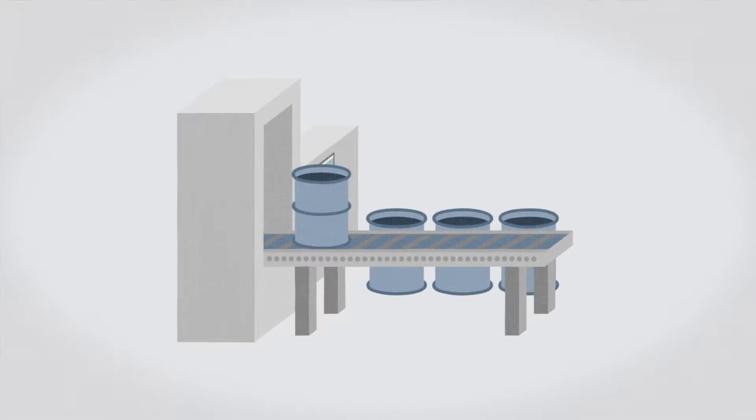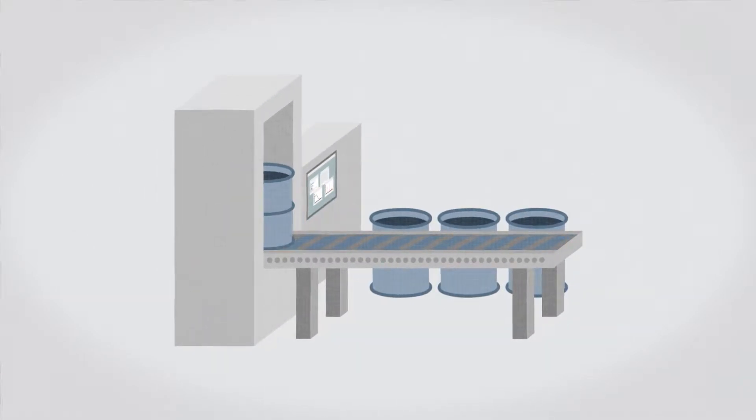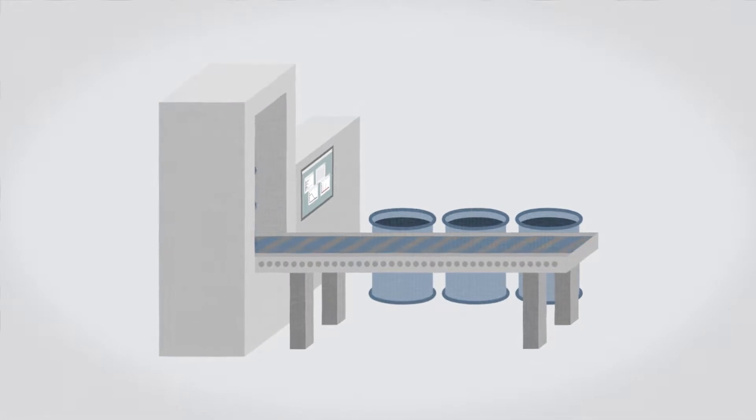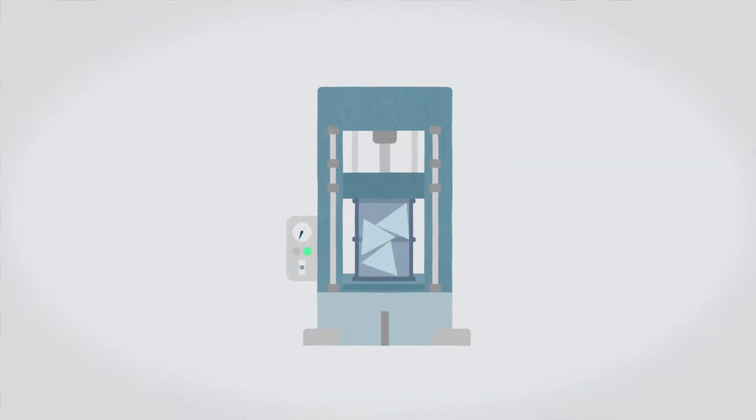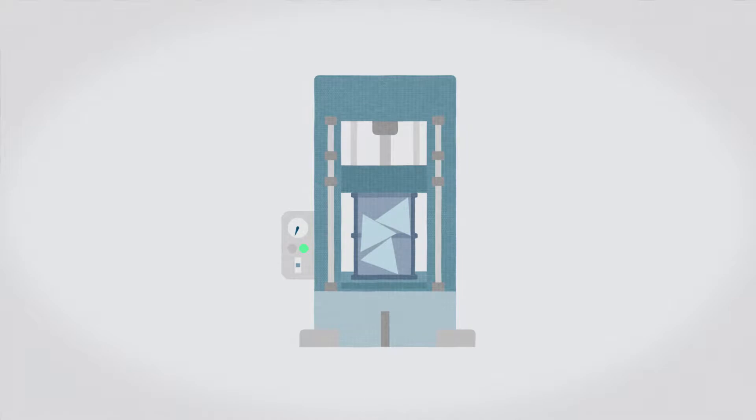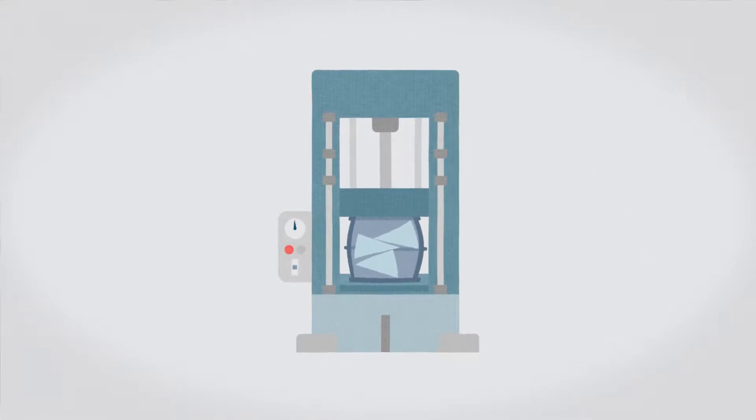Radioactive waste is first characterized to determine its physical and chemical properties, as well as its radioactivity. It's then processed, which may include sorting, decontamination, and steps to reduce volume.